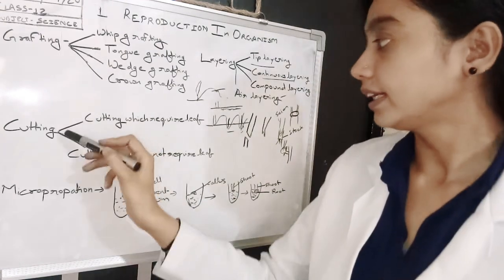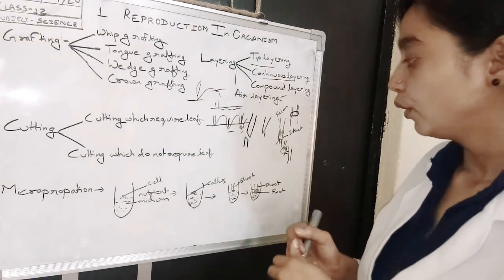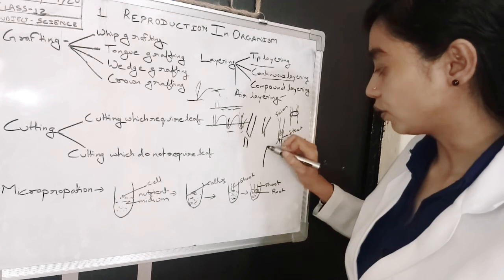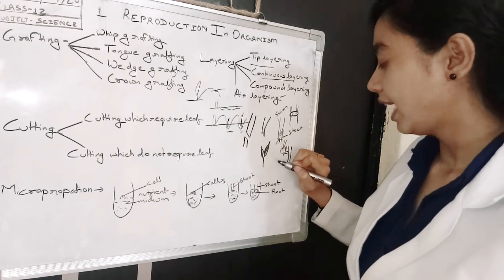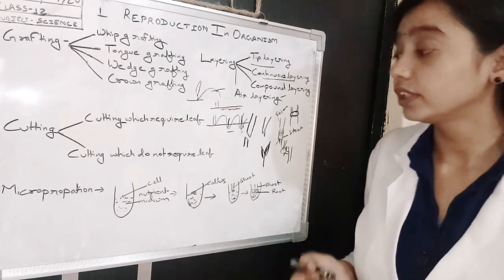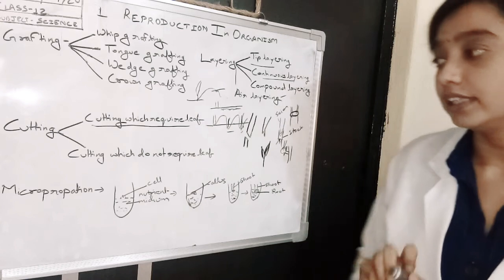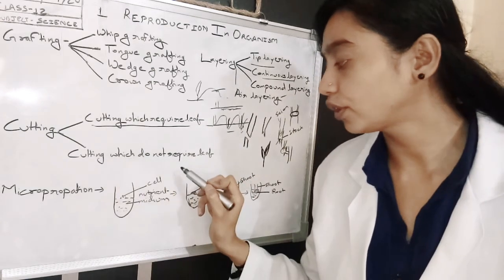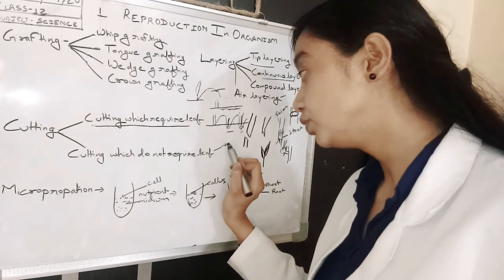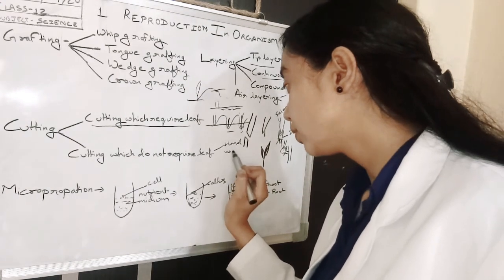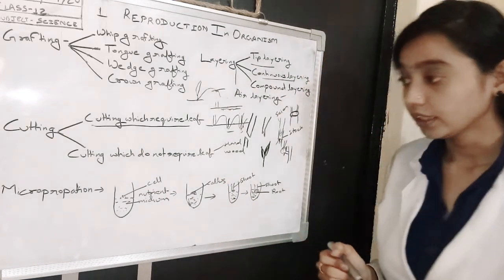Cutting can be of types that require leaves or do not require leaves. If you are taking a twig part which has a leaf portion, like herbaceous cutting and soft shoot, it is cutting which requires leaves. Cutting which does not require leaves means you are taking a cutting of hardwood.